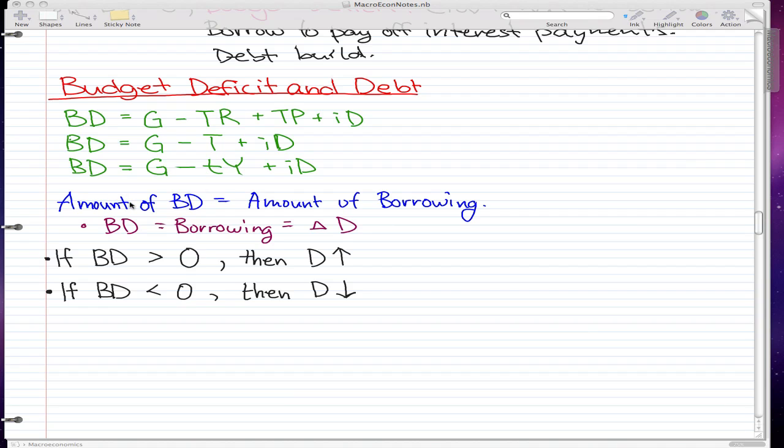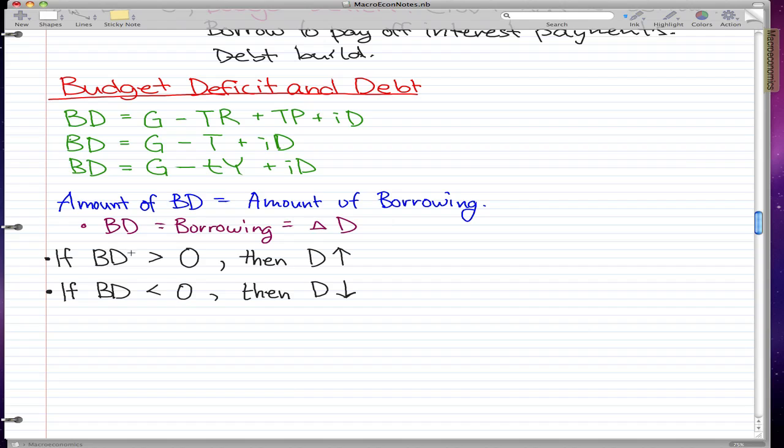In today's video, I want you to know that the amount of BD is pretty much the amount of borrowing. So BD equals borrowing, and we can see that is equal to the change in debt. We already know that if the budget deficit is greater than zero, then the debt rises. And if the budget deficit is less than zero, then the debt falls. I'm going to write that this triangle D equals change in debt.